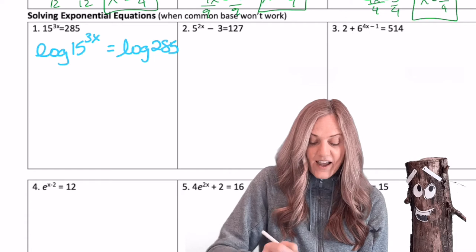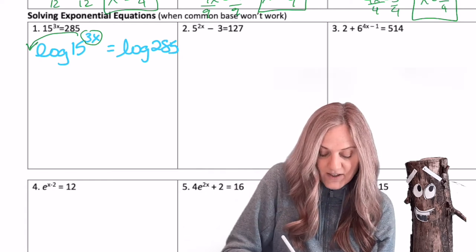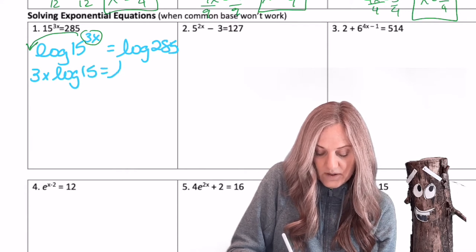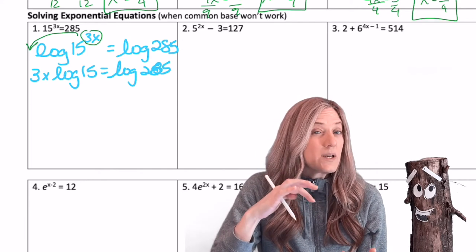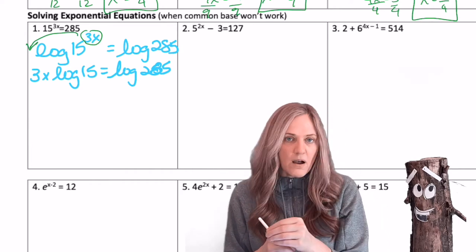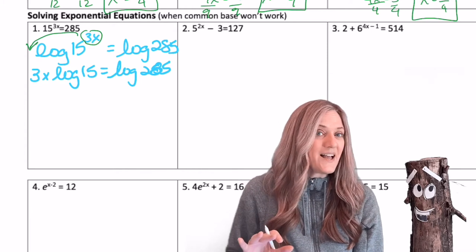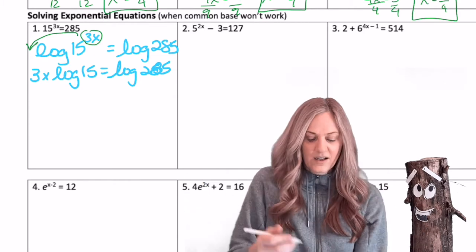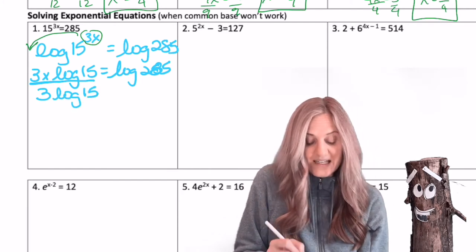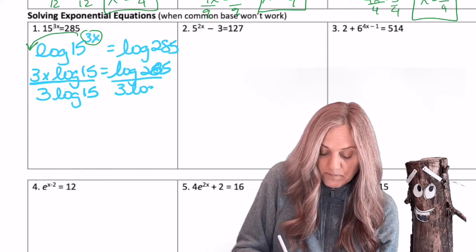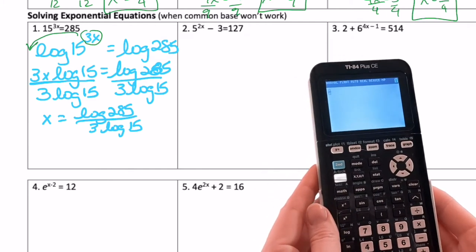Exactly. All I have to do now is use my power property from my logarithm properties and bring that exponent down in front. So 3x times log 15 equals log 285. And now I can just go ahead and solve for x. On the left-hand side, you have 3x log 15. Let's really think about that. That means 3 times x times log of 15. Log by itself is not a number. You have to have log of something. So I want to solve for x and everything is being multiplied. How do we undo multiplication? Division. So I can do this in one step. I'm allowed to divide the 3 out at the same time as I divide the log 15 out. Once again, whatever you do to the left, do to the right. And there's my final exact answer. Now it would be nice to practice on the calculator just inputting these. So let's go ahead and plug that in and check your answer.